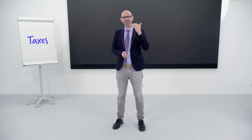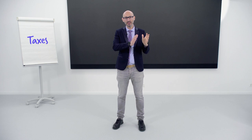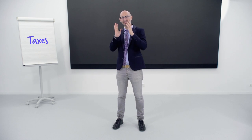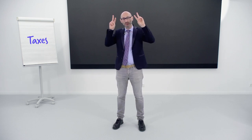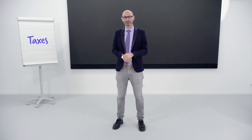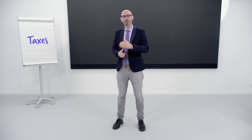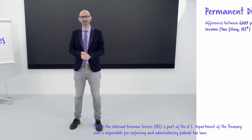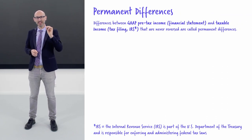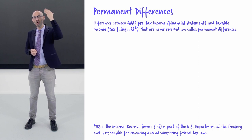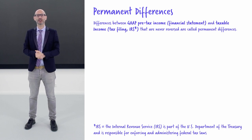The previous three slides were about temporary differences, where our tax bill and tax expense are not happening at the same time — so a timing issue. Now we go to permanent differences. A permanent difference is where the official tax rate is 20%, but you end up paying either more or less than the official rate.